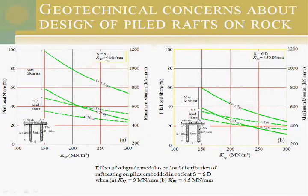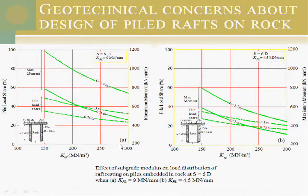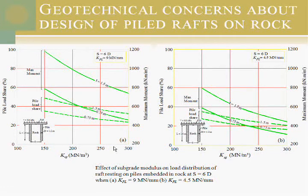We also did this for a spacing of 6D, and this showed a very large difference because the pile load share is much smaller. The difference can also occur because of the wrong assumption of the pile spring constant. If we assume the subgrade reaction is 150 and then we reach 300, the pile load share will be less and the subgrade will take more. We have to estimate both accurately because any incorrect assumption can give different results for the pile load share and the subgrade reaction share.